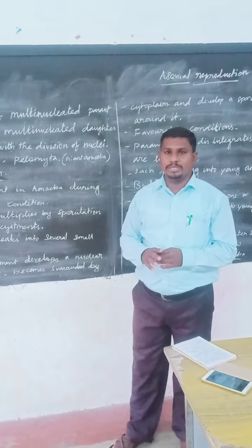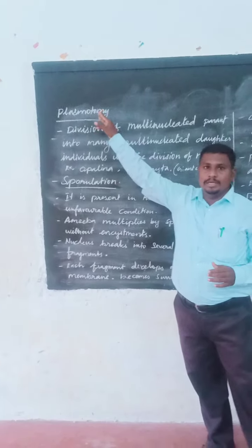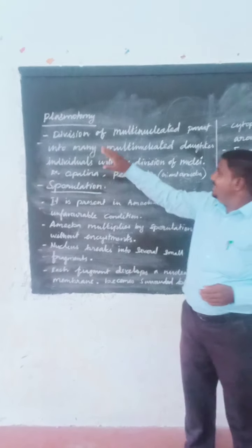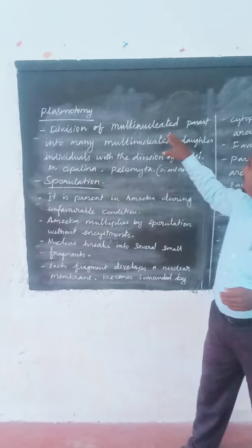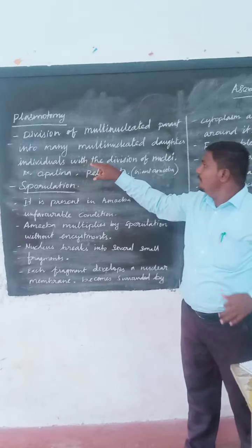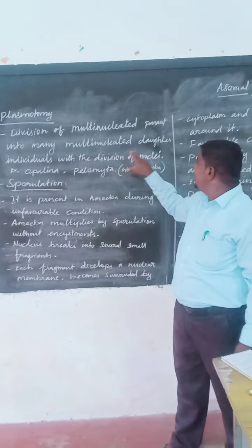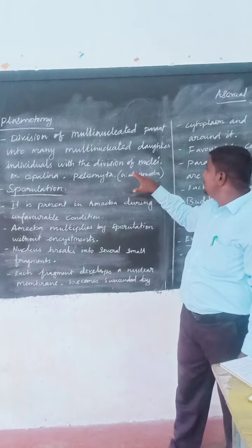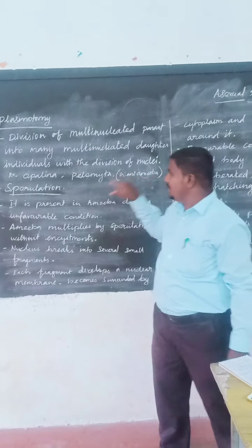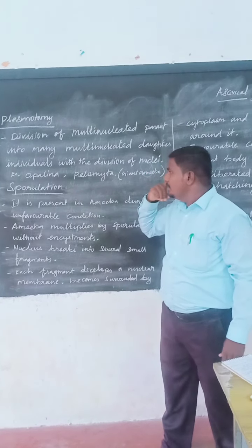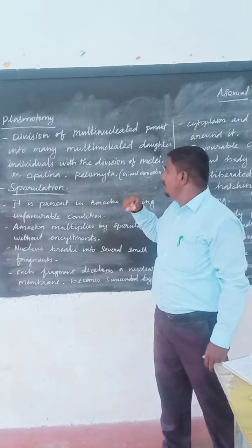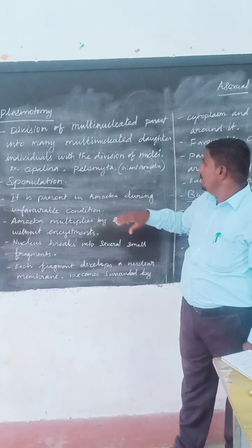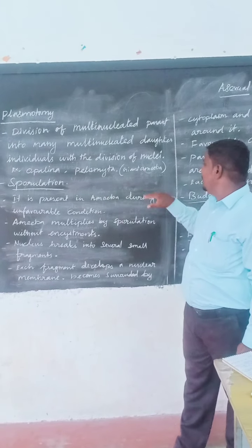Now we are going to discuss about Plasmotomy. Plasmotomy is nothing but the division of multi-nucleated cells into many-nucleated daughter cells. They are divisions of nuclei. For example, Papalia and Globesia.